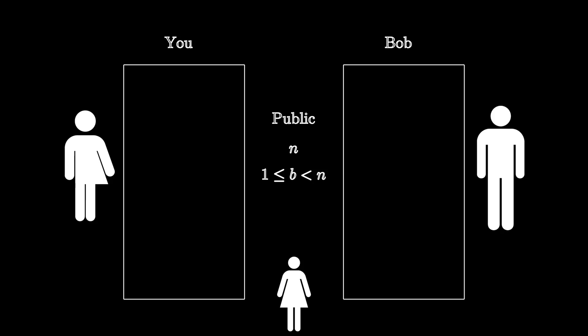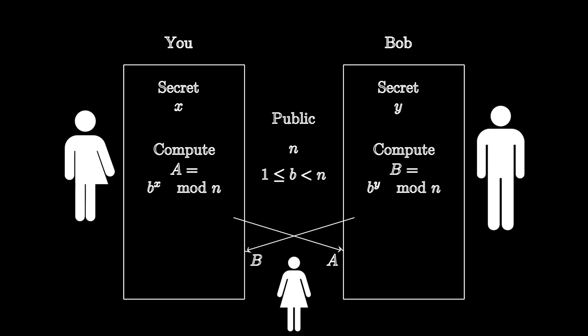Now you can secretly decide on your own exponents, say x and y, and it doesn't matter what these exponents are, so long as you don't tell anyone. Each of you now compute b to the x and b to the y respectively. We'll call your computation capital A and Bob's computation capital B. Now each of you tell each other A and B, so you each now have that info and so does Emily. By doing this, you've shrouded what your secret was and the discrete log will keep Emily at bay.